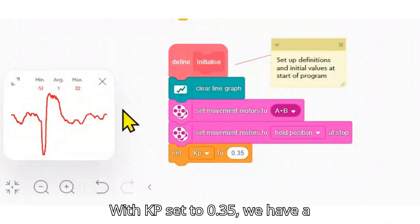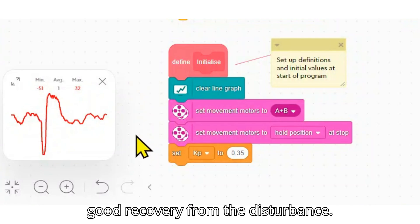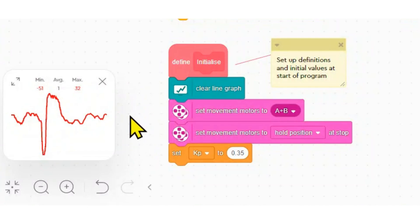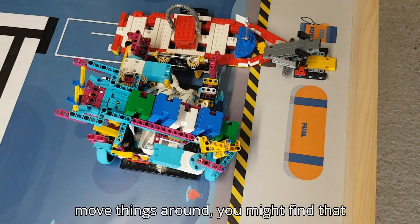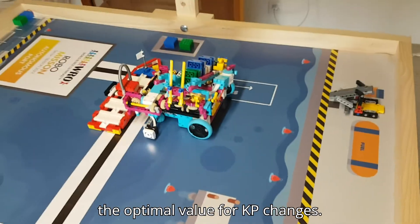With KP set to 0.35 we have a good recovery from the disturbance. If your robot has to pick up objects or move things around you might find that the optimal value for KP changes.